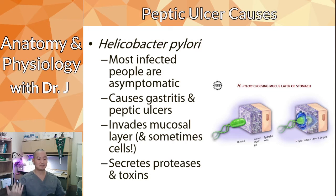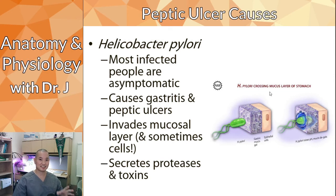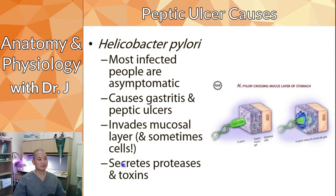H. pylori bacteria dissolve the mucus layer, making the stomach more vulnerable to gastric acid. The bacteria also directly attack the cells lining the stomach and secrete proteases and toxins that further damage the stomach lining.